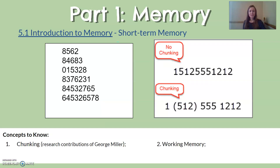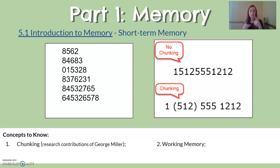Let's check our answers — the answers are on the screen, so go line by line and see where you made mistakes. I imagine it got harder as the number sets got larger, and that is really normal. In fact, most people on average can only remember about seven bits of information in short-term memory. That was studied by George Miller, who found that what you can rehearse in short-term memory really doesn't exceed seven plus or minus two bits of information.